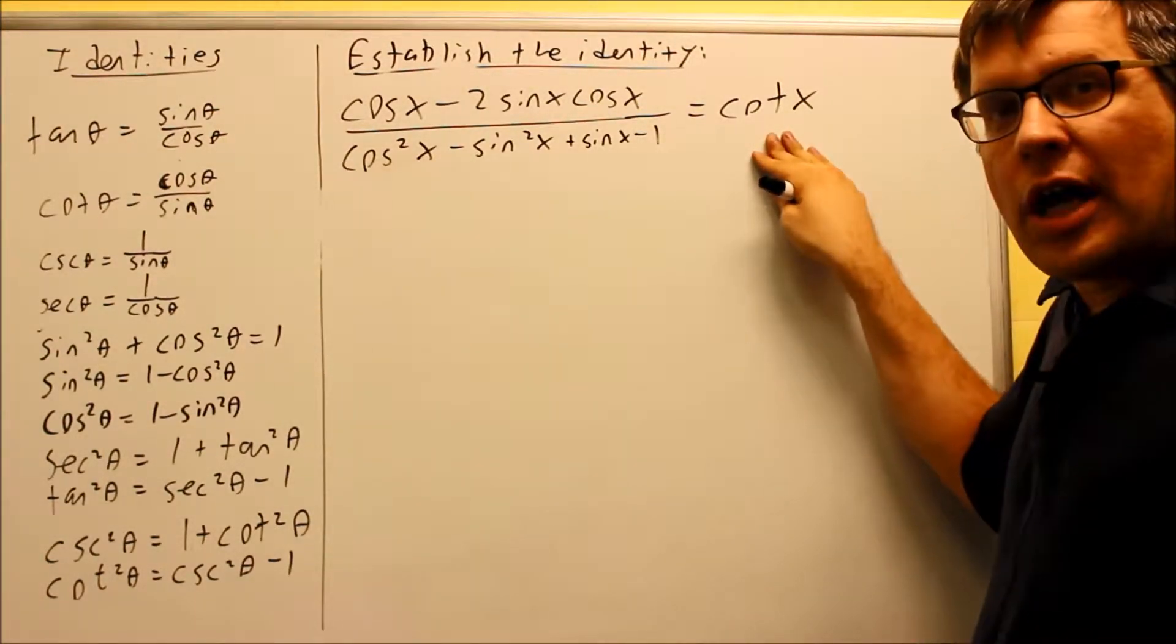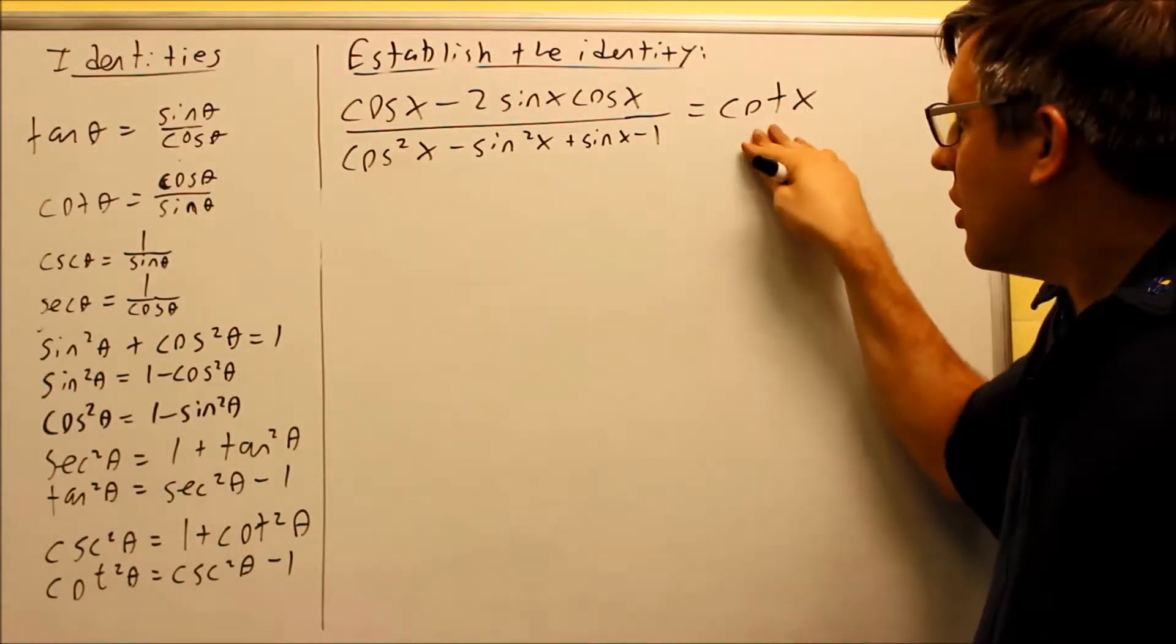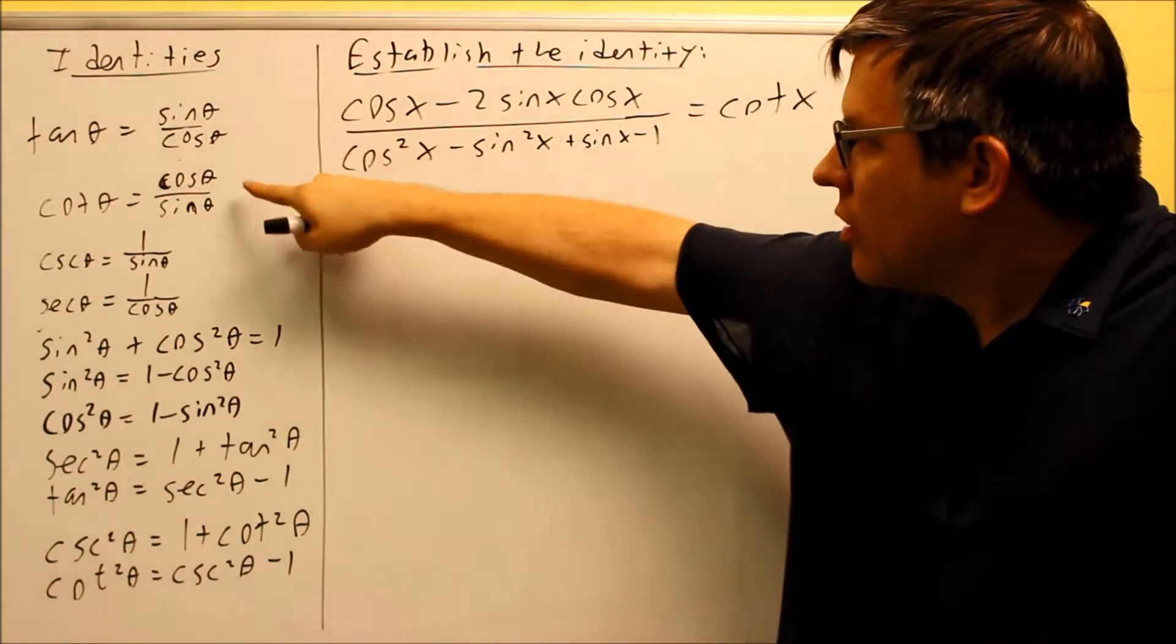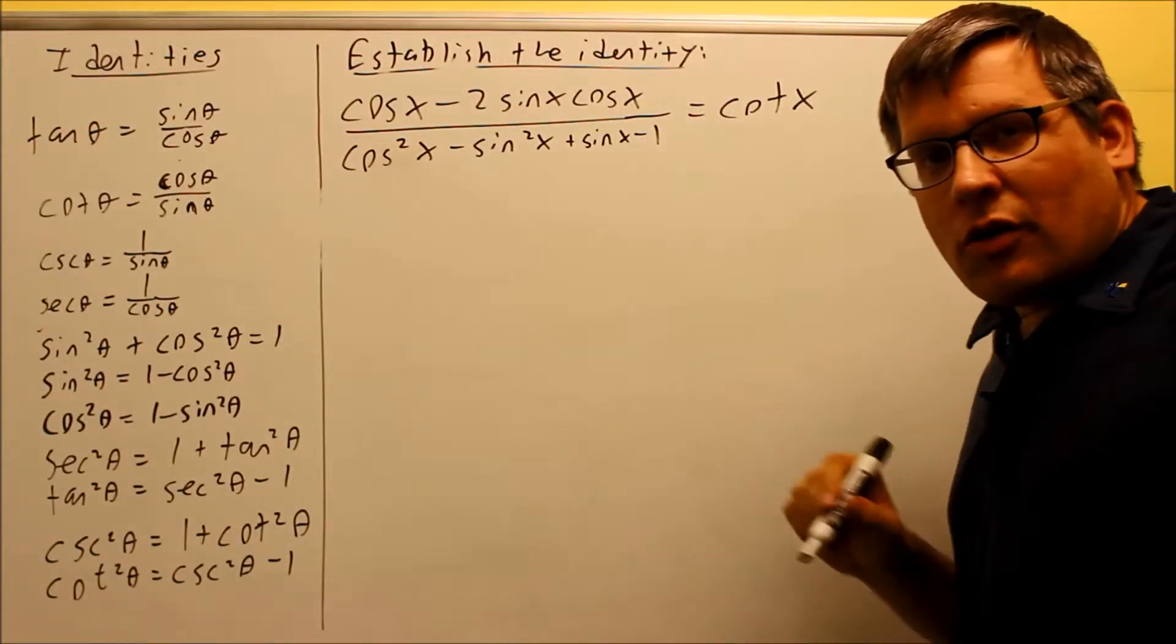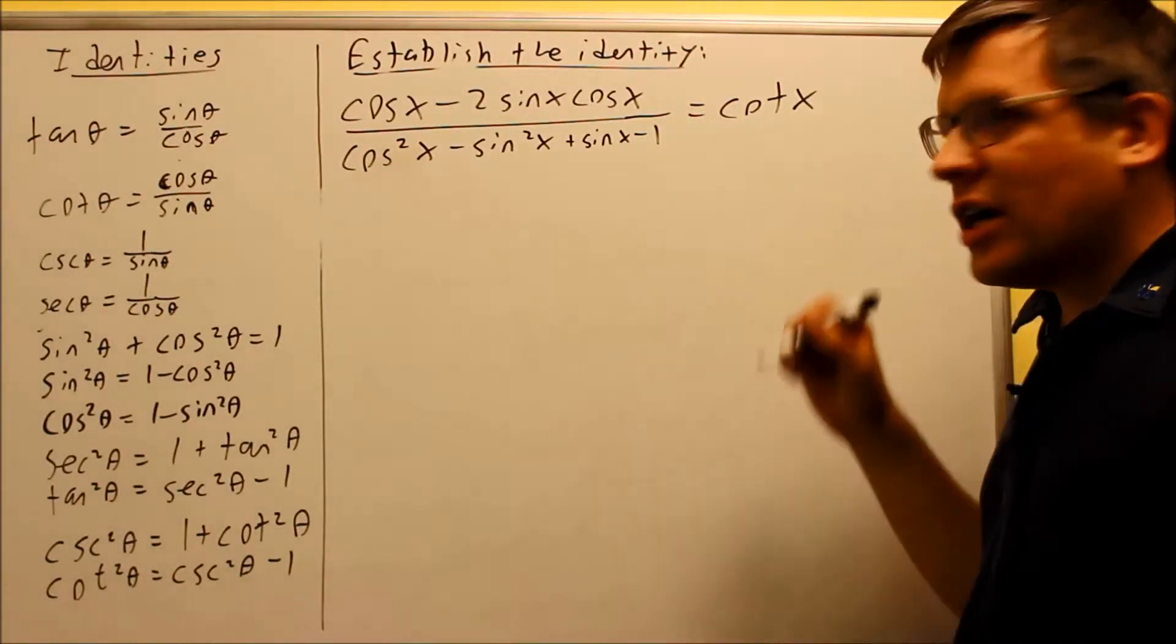So one thing we could apply is the first technique and change this into, by using our identity right here, cosine divided by sine. But if I just do that only, it's not going to be enough for me to really simplify this down any further.